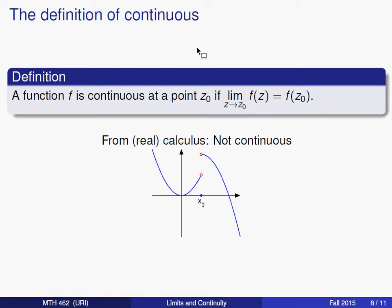The definition of continuity is fairly simple. A function f is continuous at a point z0 if the limit as z approaches z0 of f(z) is equal to the function value at z0.